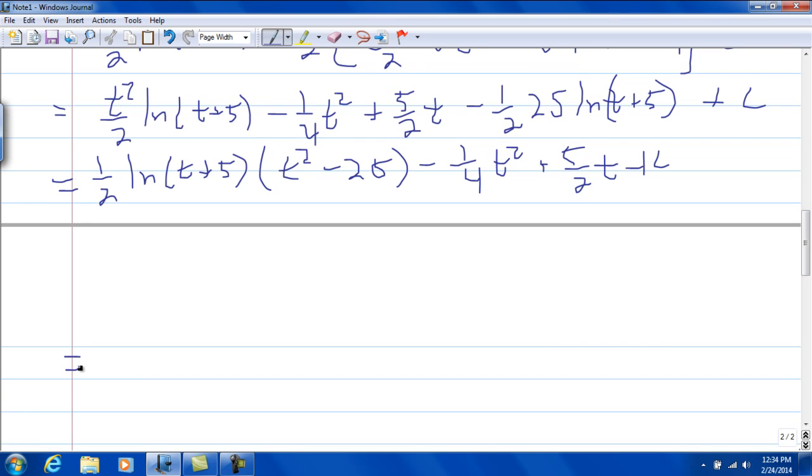So, 1 fourth, and we have parenthesis, natural log of t plus 5 times t squared minus 25, and then pull the 1 fourth out, so it's minus t squared. If I'm going to be factoring 1 fourth out of 5 halves, it's going to be, basically multiplying it by 4, so it becomes 10t plus c.